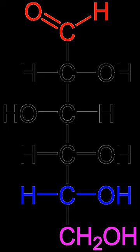Carbohydrate consumed in food yields 3.87 kilocalories of energy per gram for simple sugars, and 3.57 to 4.12 kilocalories per gram for complex carbohydrates in most other foods. Relatively high levels of carbohydrate are associated with processed foods or refined foods made from plants, including sweets, cookies and candy, table sugar, honey, soft drinks, breads and crackers, jams and fruit products, and pastas and breakfast cereals.